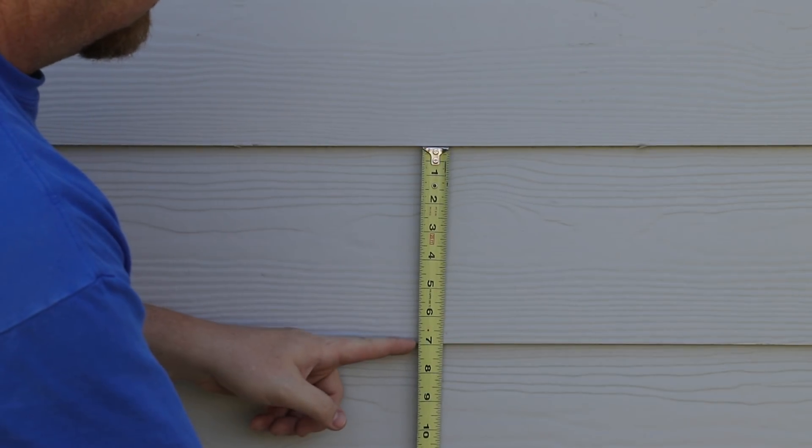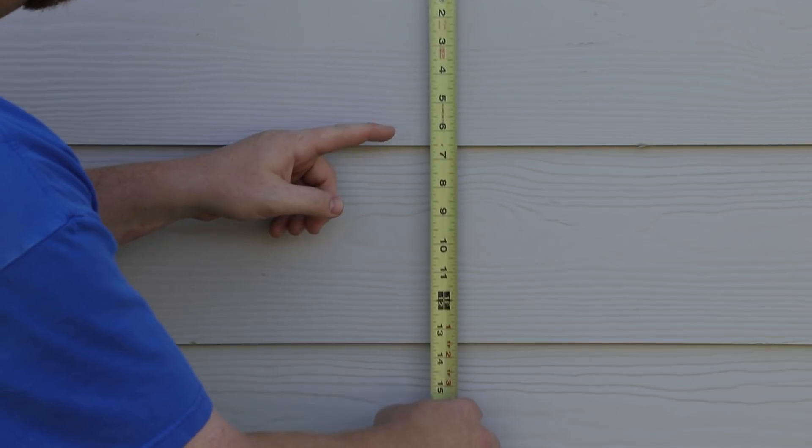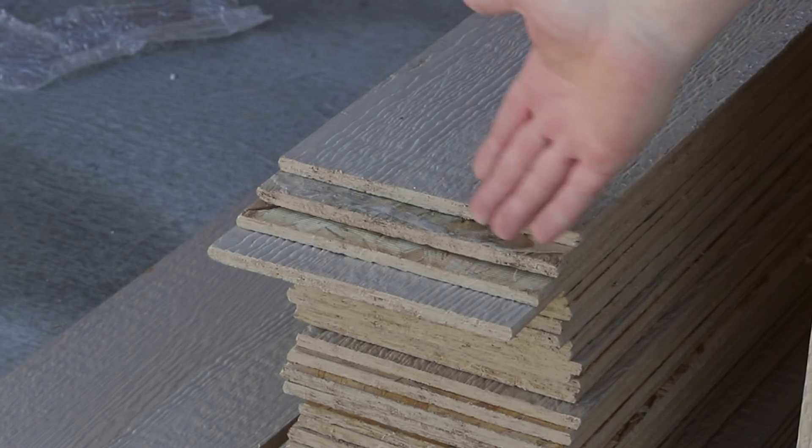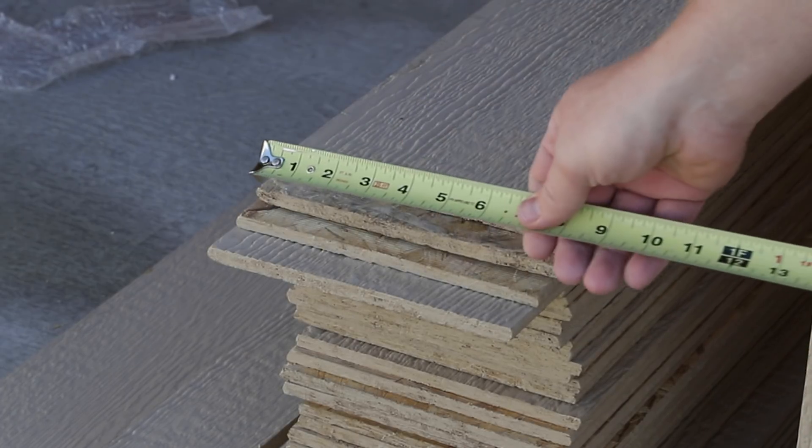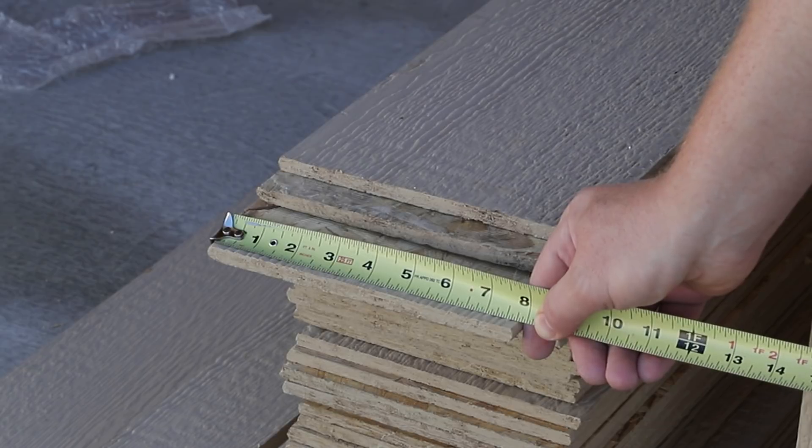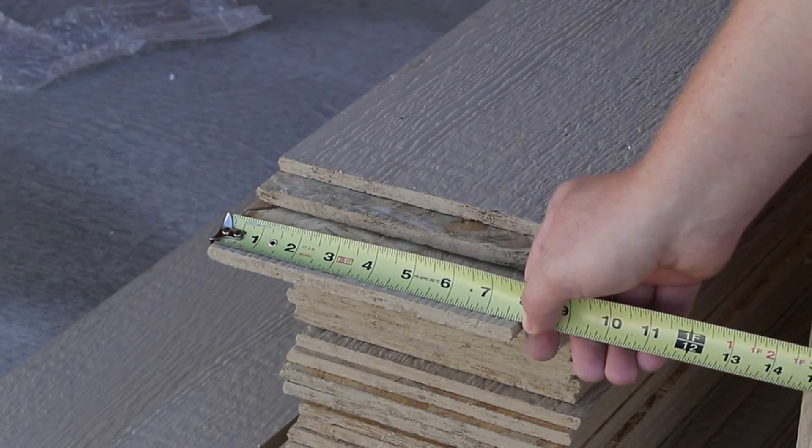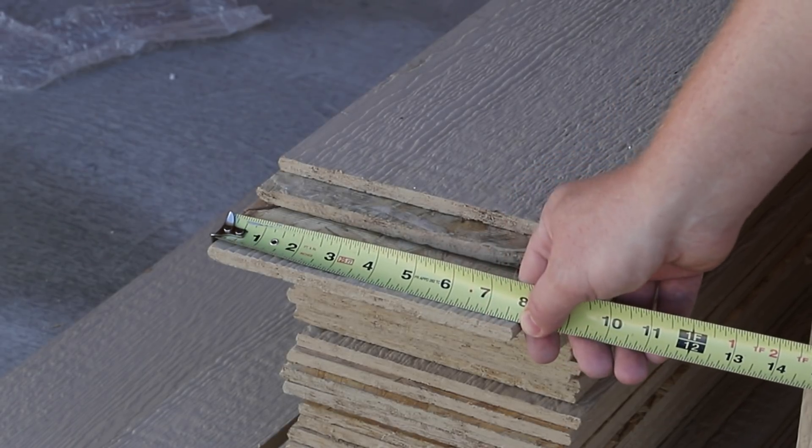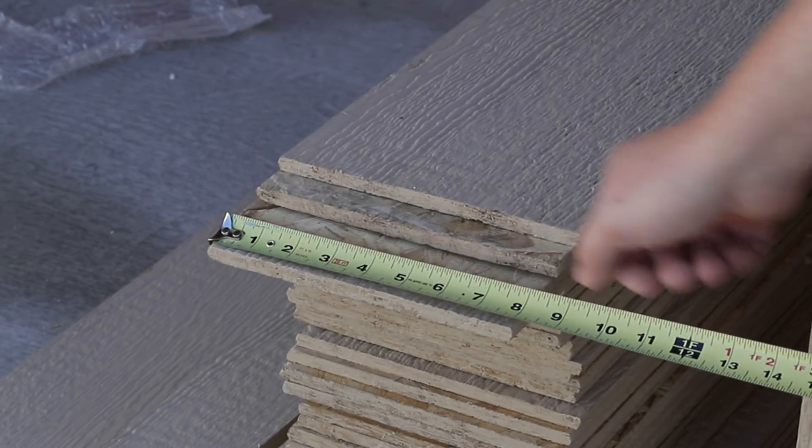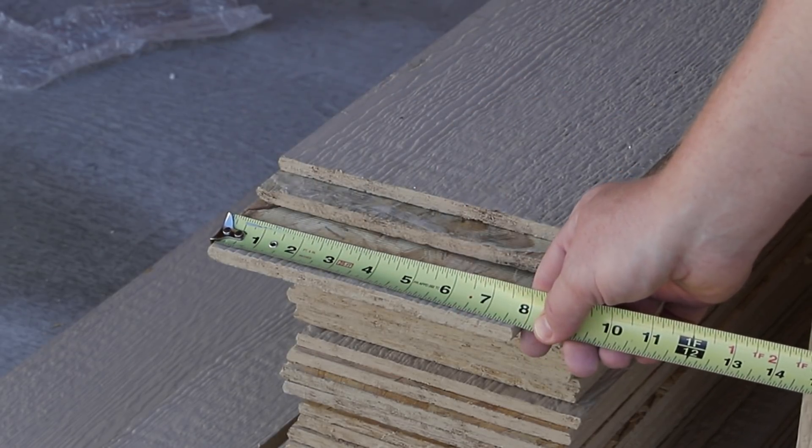So you can see from my existing siding, I have a seven inch reveal. That means you can see seven inches worth of each board. So this is the siding I'm going to be installing on my shed, and you can see that it is not quite eight inches. It's seven and seven eighths. So that means the gauges that I'm building need to have a seven eighths inch overlap to give me a seven inch reveal. So seven eighths is the magic number.